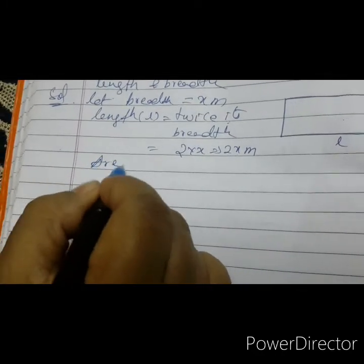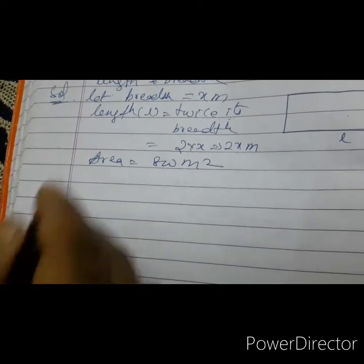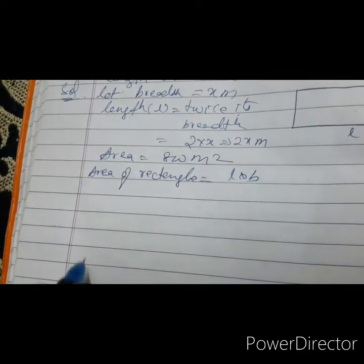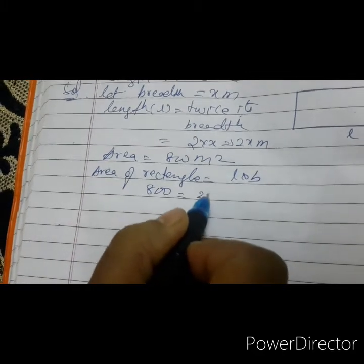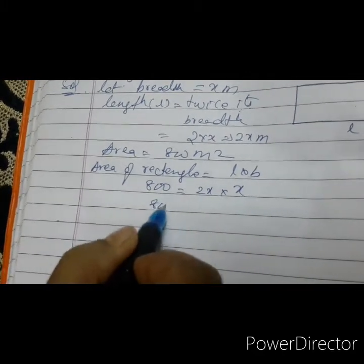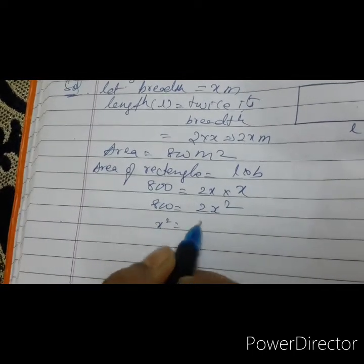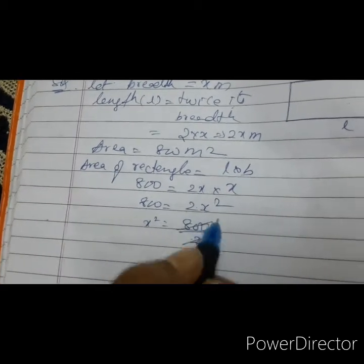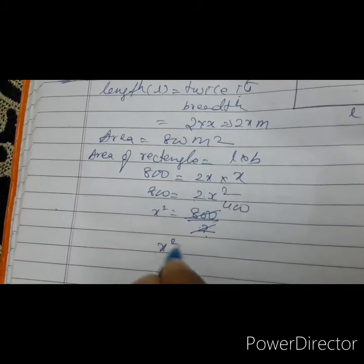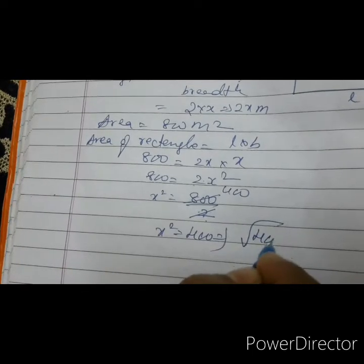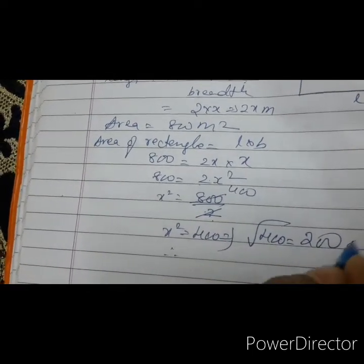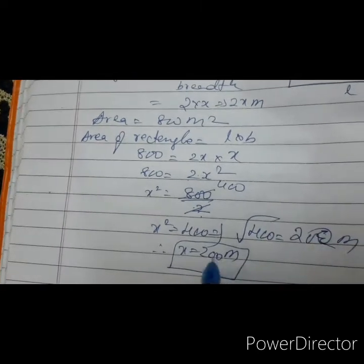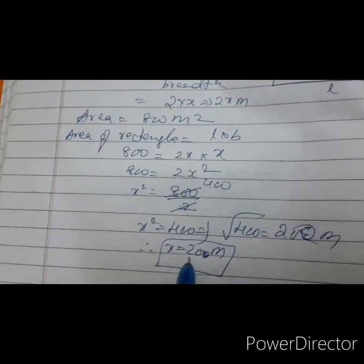Area is also given: 800 metre squared. Area of rectangle equals L into B. So 800 equals 2x into x, which gives 800 equals 2x squared. x squared equals 800 by 2, which is 400. Taking the root, root of 400 equals 20. Therefore x equals to 20 metre.